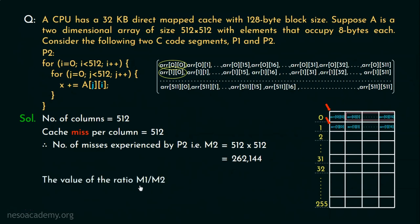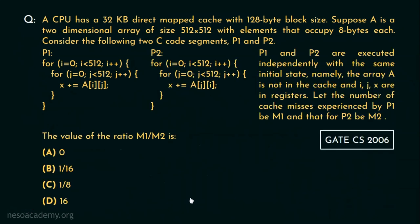Therefore the ratio between M1 and M2 is 16384 that is the value of M1 by 262144 which is 1 upon 16. Therefore the answer of this question is option B.